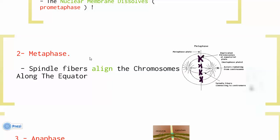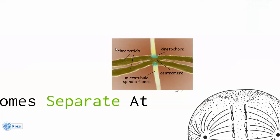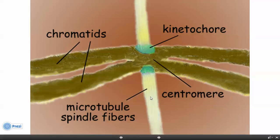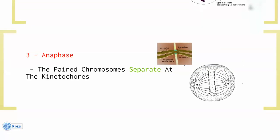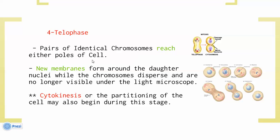Metaphase — the spindle fibers align the chromosomes along the equator; it is sometimes called the aligning phase. Anaphase — the separation phase; the paired chromosomes separate at the kinetochores. The centromere and microtubule spindle are involved in this separation. Telophase — pairs of identical chromosomes reach either pole of the cell. New membranes form around the daughter nuclei while the chromosomes disappear and are no longer visible under the light microscope. Remember: chromosomes become visible in prophase and disappear in telophase.